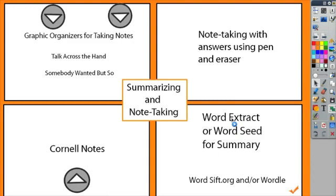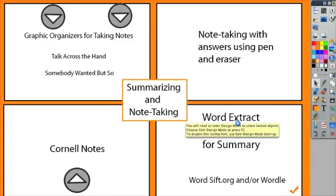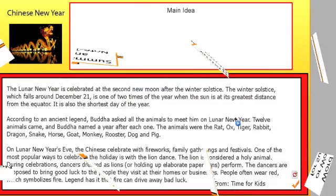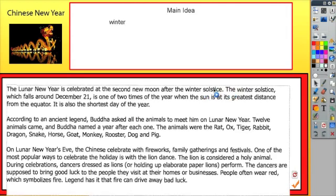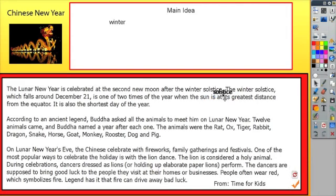The last thing I want to show you is using WordExtract. WordExtract is an action that you can set up in the Actions browser. Here's an example of an article I took from Time for Kids, and I set it up already to use WordExtract. So now when I click on one of the words, it actually duplicates the word and makes another copy of it for me. You can use WordExtract to have students pull out the main ideas and create their own main idea sentence. If you accidentally pull it out twice, you can just delete it.